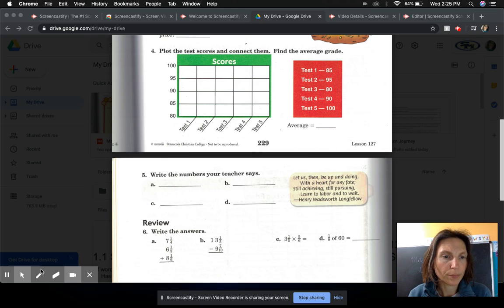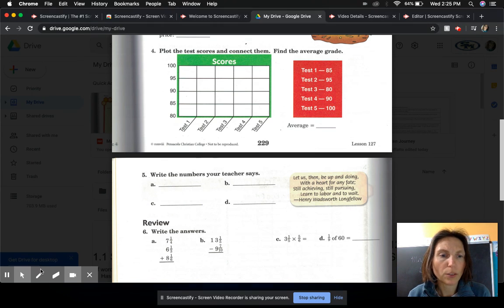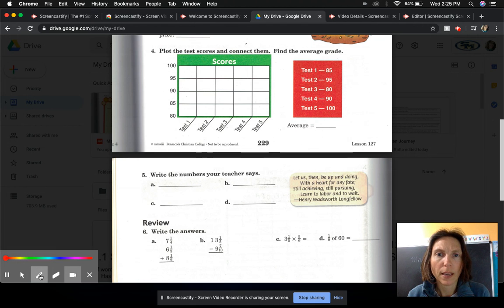Now let's look at number four. It says plot the test scores and connect them. So we need to plot the score the student received for each test.